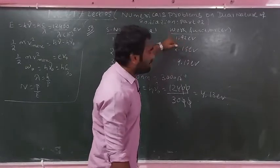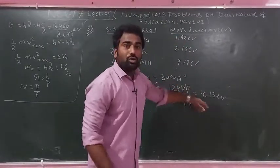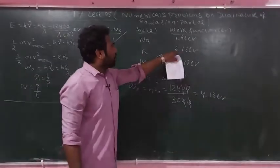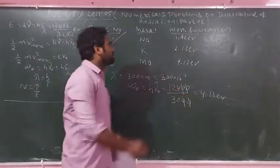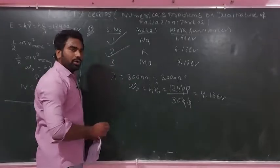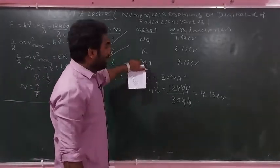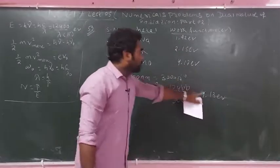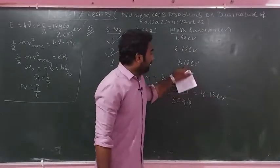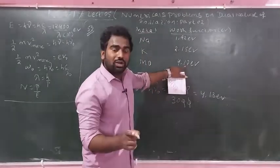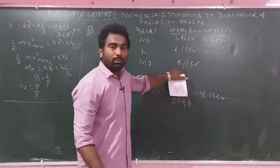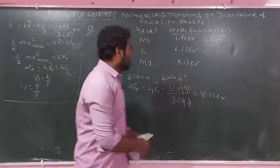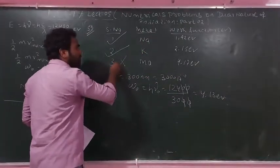Incident energy is 4.13 eV. Sodium needs only 1.92 eV — it will emit. Potassium needs 2.15 eV — it will emit, since 4.13 > 2.15. Molybdenum requires 4.17 eV, which is greater than the incident energy of 4.13 eV, so Molybdenum will NOT emit photoelectrons.